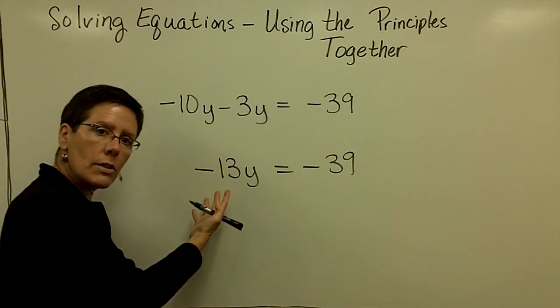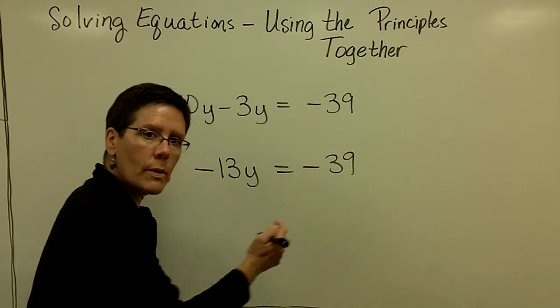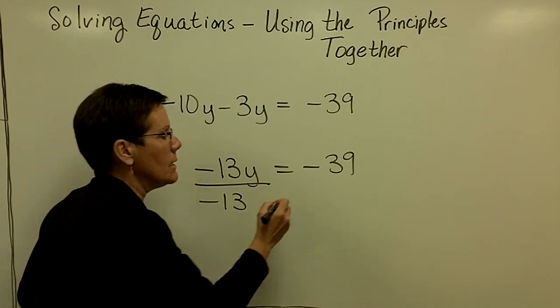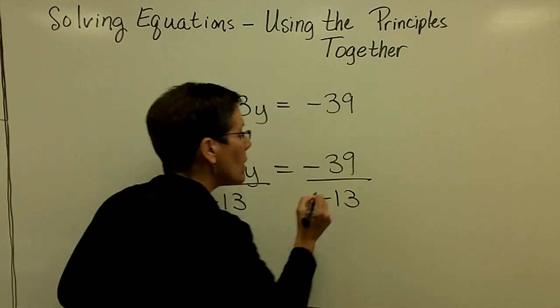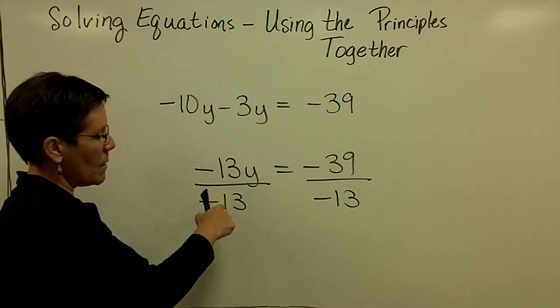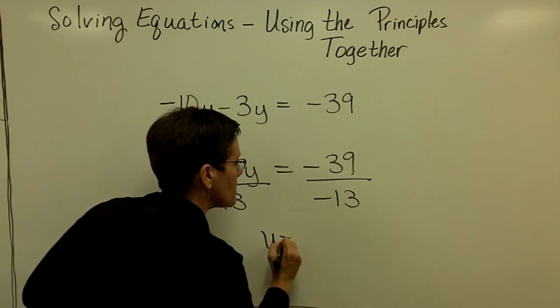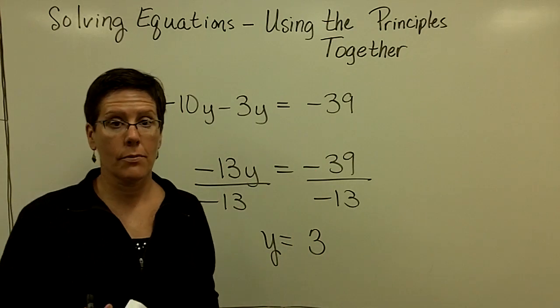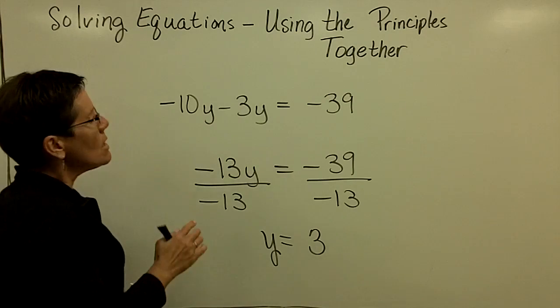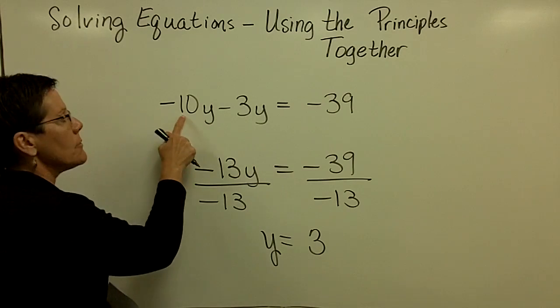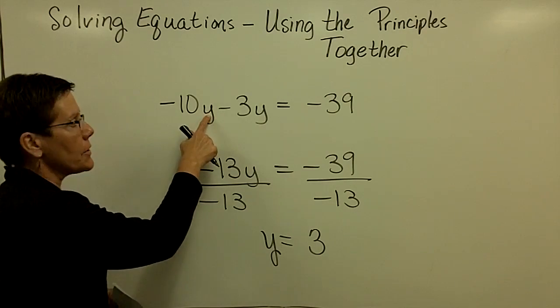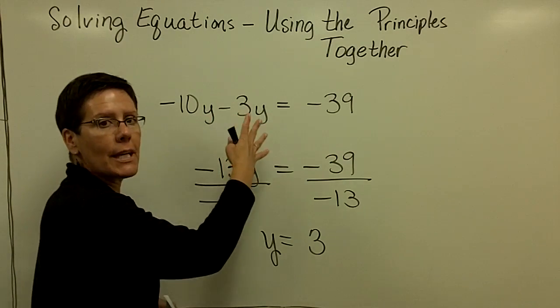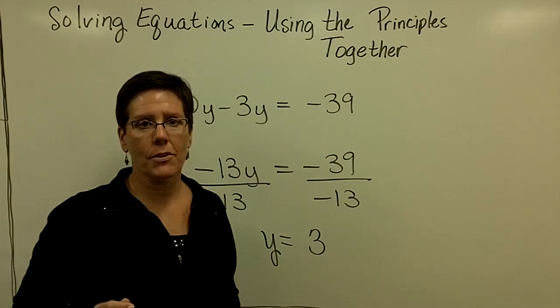And now finally, because I have one term on the left and one term on the right, I'm ready to divide both sides by a negative 13 in order to get y alone. That will become a 1, so I'll have y all by itself. And a negative divided by a negative is a positive, and it's equal to a positive 3. Pretty easy one to check. A negative 10 times 3 is a negative 30. A negative 3 times 3 is a negative 9. And a negative 30 and a negative 9 is that negative 39.